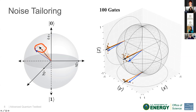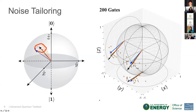A couple things to note: the RC vector is much more co-aligned with the ideal state. Also, there is a reduction in the length of this Bloch vector because we're tailoring these coherent errors into stochastic errors, so it, on average, leads to decoherence. However, it is much more co-aligned with the ideal state. And at the end of the circuit, the RC vector is much more co-aligned with the ideal state than the bare vector.